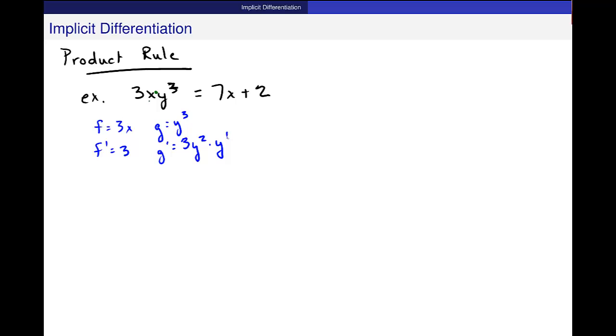Okay, so then the product rule is fg prime plus gf prime, right? So I get 3x times 3y squared times y prime plus y cubed times 3. And that's the left side of this and then I'll go ahead and differentiate the right side. The derivative of 7x with respect to x is just 7 and the derivative of 2 is 0.